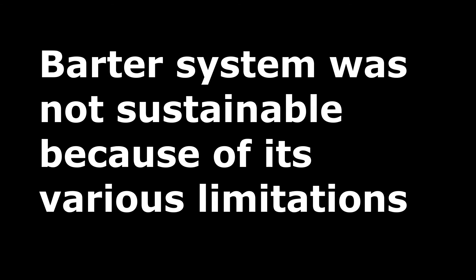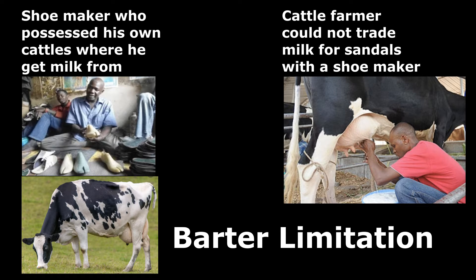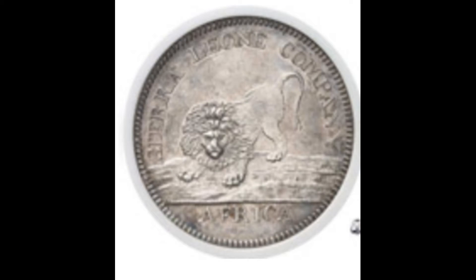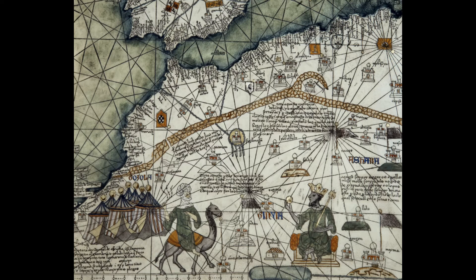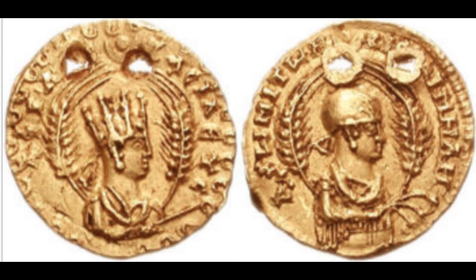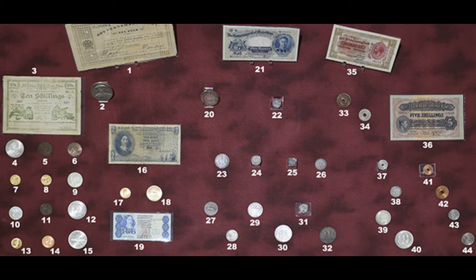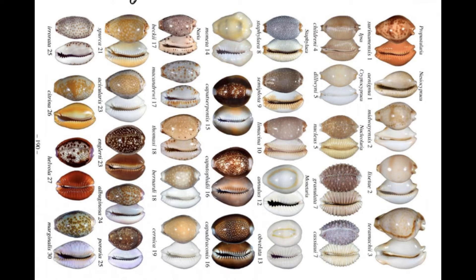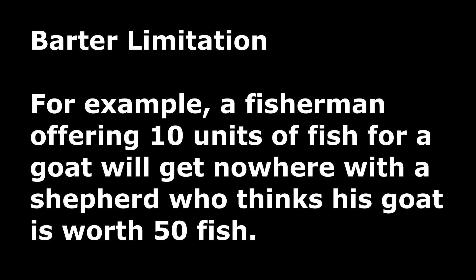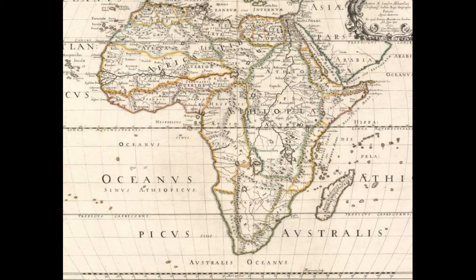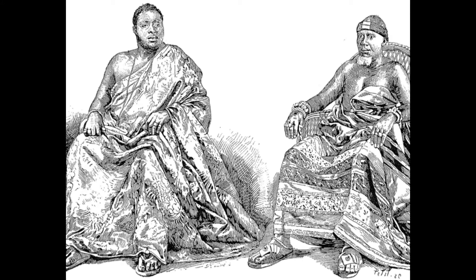This system was not sustainable because of its various limitations. For example, a cattle farmer could not trade milk for sandals with a shoemaker who already possessed his own cattle and could get milk from elsewhere. But he could trade a generally acceptable item exchangeable for any good or service — this was the point when money came into the picture. Another limitation of the barter system was difficulty in offering precise amounts to trade. For example, a fisherman offering 10 units of fish for a goat would get nowhere with a shepherd who thinks his goat is worth 50 fish. Also, people did not necessarily have tradable goods to barter just when they needed to obtain other goods.